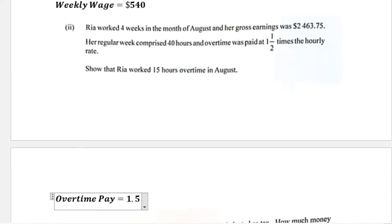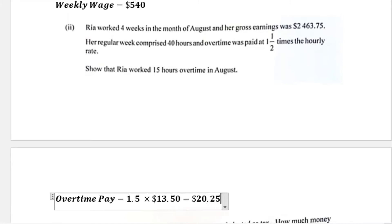The overtime pay equals one and a half times the regular hourly rate. The regular hourly rate is $13.50, so 1.5 multiplied by 13.50 gives us $20.25. Therefore for every hour that Ria works in overtime, she is getting $20.25.